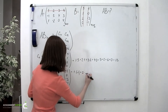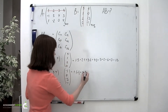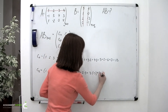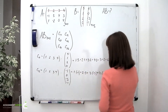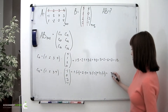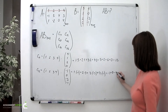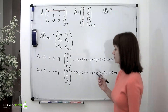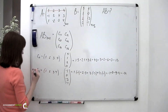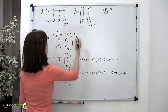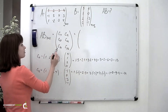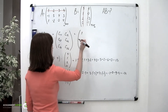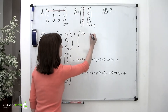It goes: 1 times negative 1, plus 2 times 0, plus 3 times negative 3, and plus 4 times negative 1, which equals negative 1 plus 0 minus 9 minus 4, which is negative 14. So we already have the first row of our product matrix, consisting of the elements 13 and negative 14.